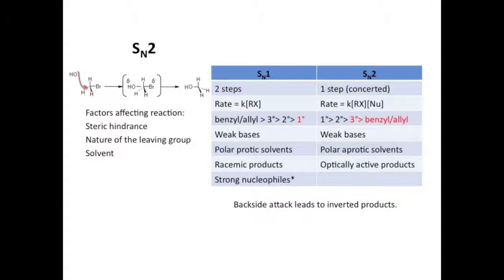Whether the product remains the same enantiomer as the reactant is dependent on the priority of the nucleophile versus the priority of the leaving group. In other words, if the reactant were R, the product would be S if the nucleophile and leaving group share the same priority. And if they didn't share that, the product can actually remain R.